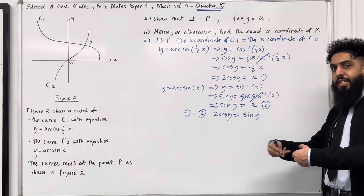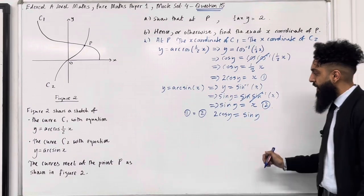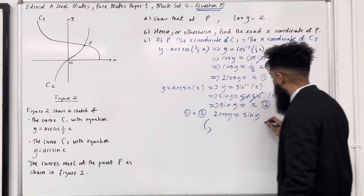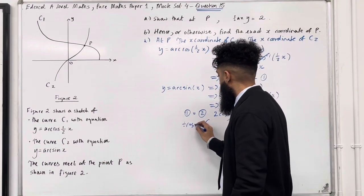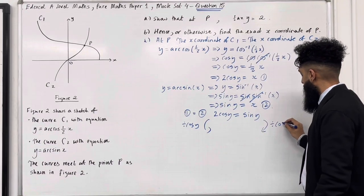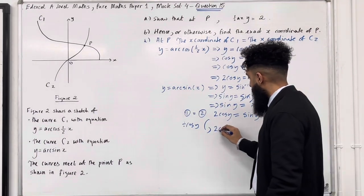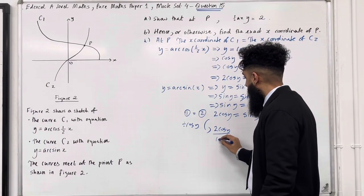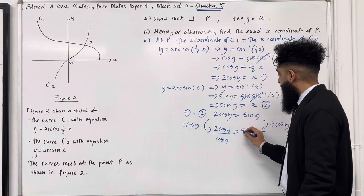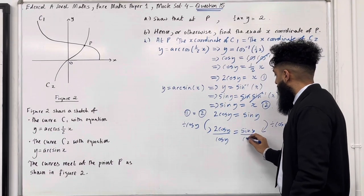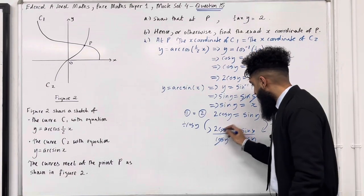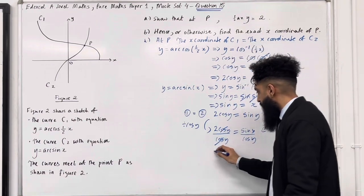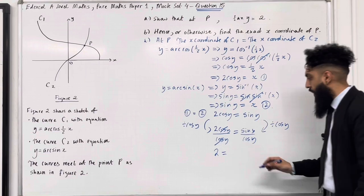So I must introduce a tan in the equation. The way I do this is to divide both sides of the equation by cos y. So I've got 2cos y/cos y = sin y/cos y. The cosines cancel out, reducing the equation to 2 = tan y.